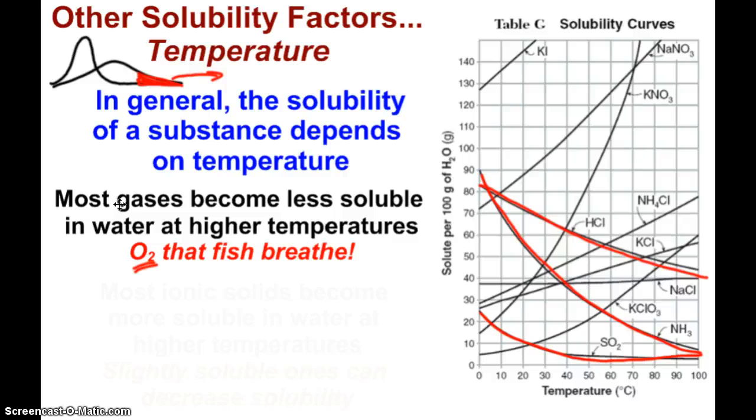When the water gets too warm, oftentimes, fish can start dying because the amount of oxygen that's in the water is not high enough to support them breathing.